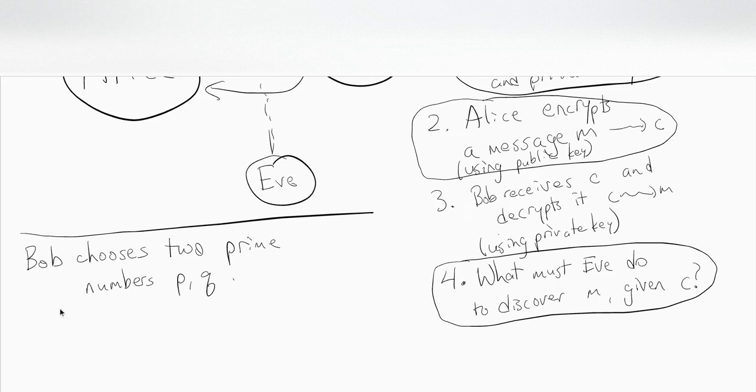Then he computes the following from p and q: computes n equals pq, and he also computes phi of n. That's the Euler phi function. Phi of n is just p minus one times q minus one. He has chosen p and q beforehand, so p times q is just multiplication. This is easy.